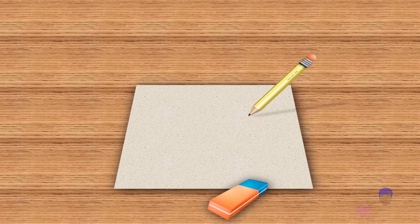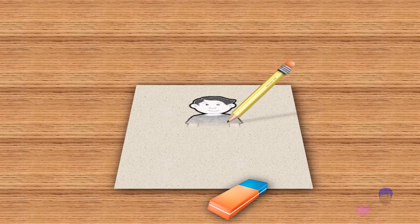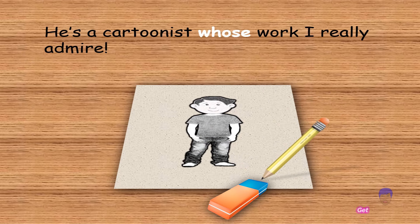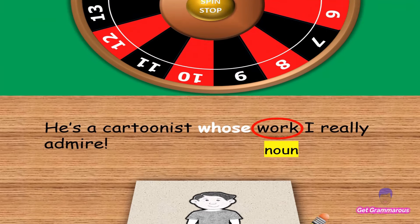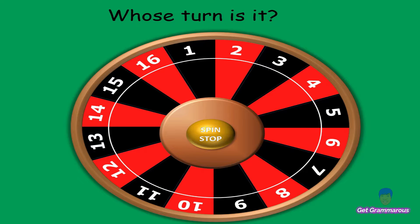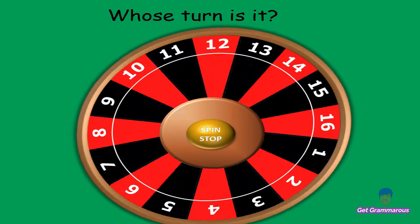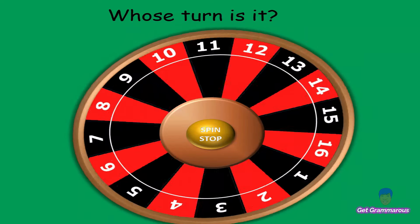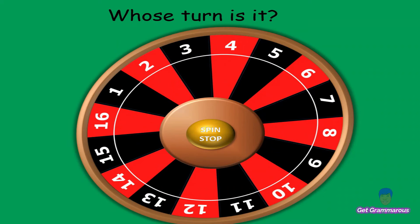For example: 'He's a cartoonist whose work I really admire.' Whose modifies 'work,' which is a noun. Here's another example: 'Whose turn is it?' Whose modifies 'turn,' which is also a noun.